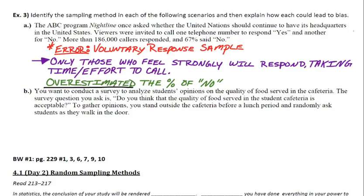Part B says you want to conduct a survey to analyze students' opinions on the quality of food served in the cafeteria. The survey question you ask is, do you think that the quality of food served in the student cafeteria is acceptable? To gather opinions, you stand outside the cafeteria before a lunch period and randomly ask students as they walk in the door.